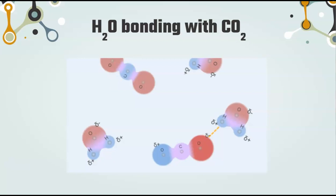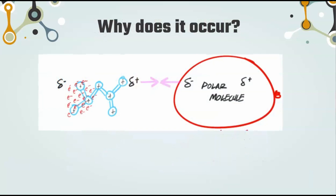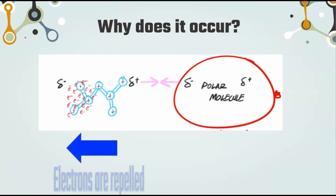In another example, we can look at H2O bonding with CO2. Again, the CO2 when alone is non-polar, but in this diagram we see another induced dipole attraction — the polarity of the water molecule has persuaded the CO2 molecule to have a dipole. As the polar molecule gets close to the non-polar molecule, the electrons are repelled and migrate to the far end. The other end then has a partial positive charge. The pink arrows represent the intermolecular interaction between the negative end of the polar molecule's permanent dipole and the positive end of the non-polar molecule's temporary induced dipole.